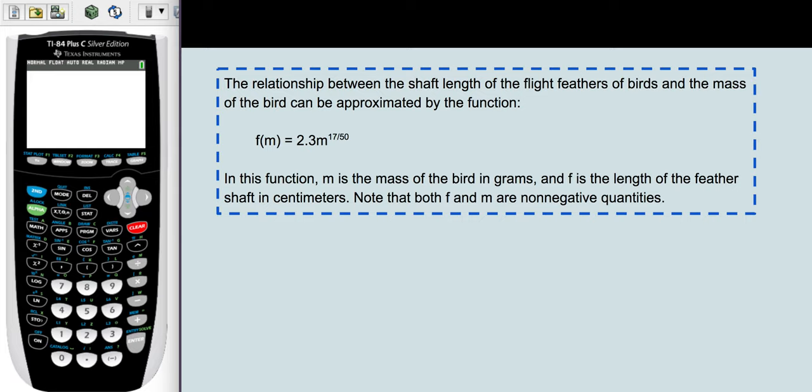In this function, m is the mass of the bird in grams, and f is the length of the feather shaft in centimeters. Note that both f and m are non-negative quantities. Length and mass are non-negative.